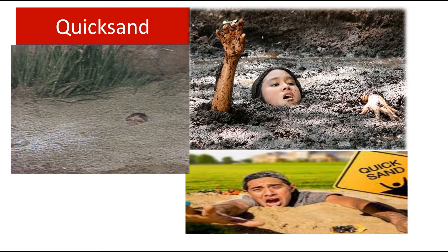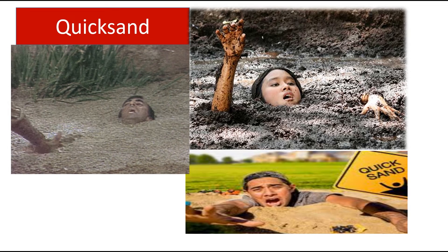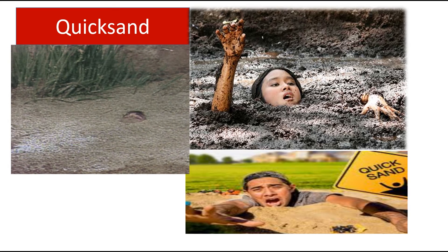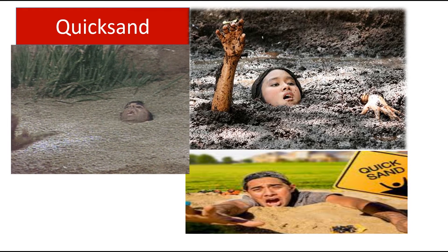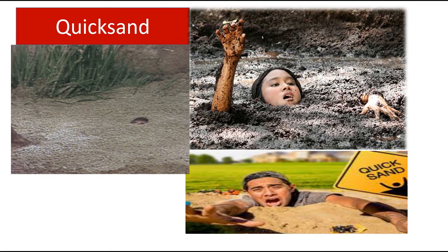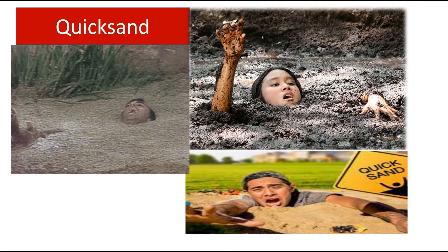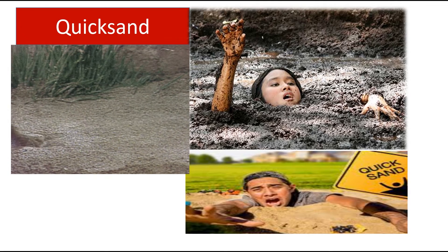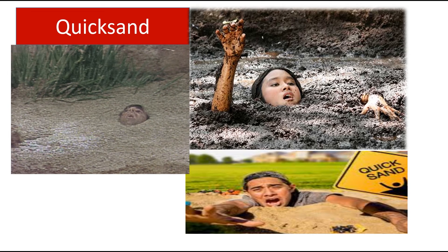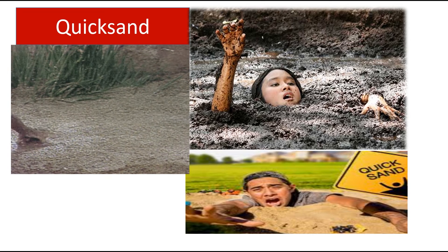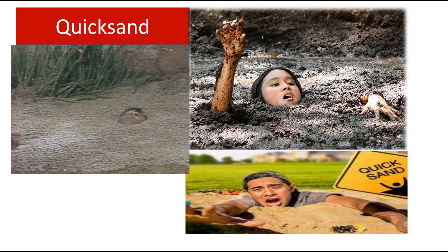Quicksand is an unstable layer of sand where the sand forms a suspension with trapped water inside it. Quicksand occurs when underground water flows upwards and saturates an area of loose sand so that the sand loses its strength. Quicksand usually occurs near lakes, wetlands, or near the coast. When a victim steps into quicksand, only their feet would sink, but panicked body movement will cause the person to sink deeper.